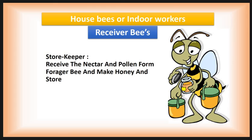The next indoor worker is the receiver bee, also called the storekeeper. They receive nectar and pollen from forager bees, make honey, and store it. Receiver bees evaporate nectar by vigorously shaking it in their proboscis to produce honey. Enzymes like invertase mix with the nectar, and invertase catalyzes the hydrolysis of sucrose into fructose and glucose. The main component of nectar is sucrose, which is converted into honey — that is, fructose and glucose. The 12 to 18 days old worker bees perform these jobs.